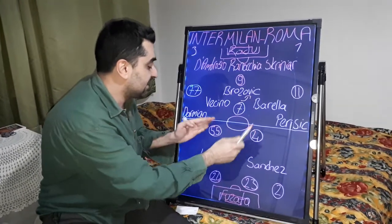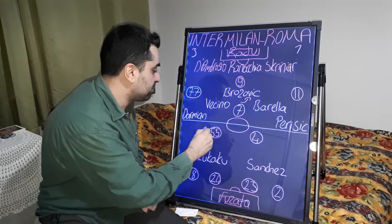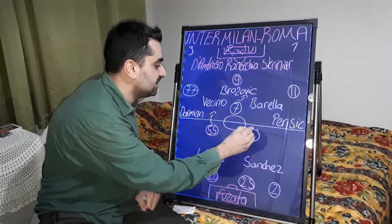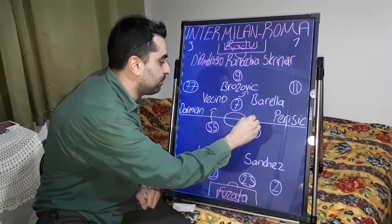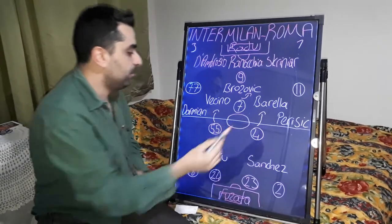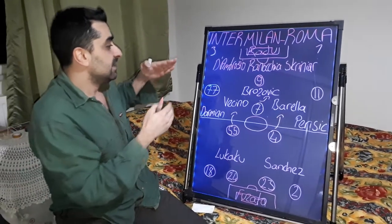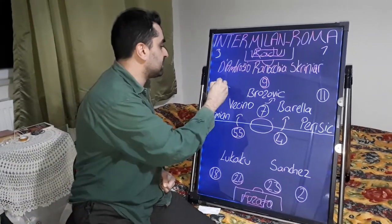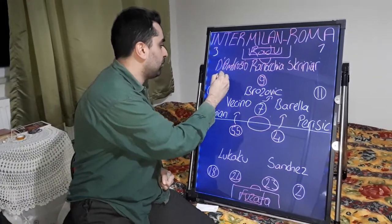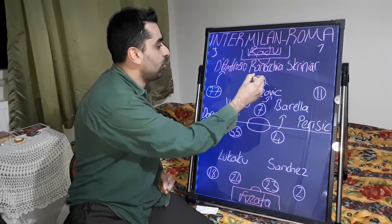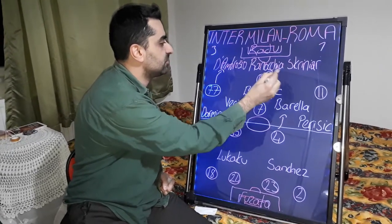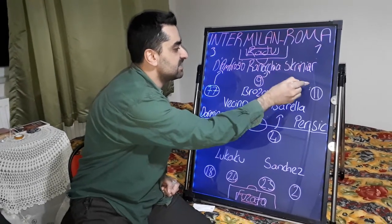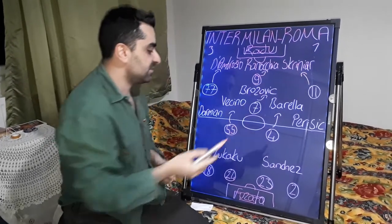Darboe played close to Vecino, and the other pivot Cristante played close to midfielder Barella. On the forward line for Roma, Mkhitaryan pressed on D'Ambrosio, and Zabaleta played 1v1 versus defender Ranocchia.